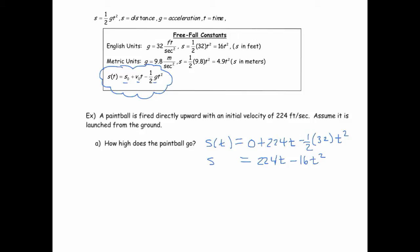All right, so now we've got our function, which gives us the height of the paintball as a function of time. And so how high does the paintball go? Well, we have to think about what's true about the ball at the instant it's at its highest point. When it's at its highest point, we know that the velocity is 0.